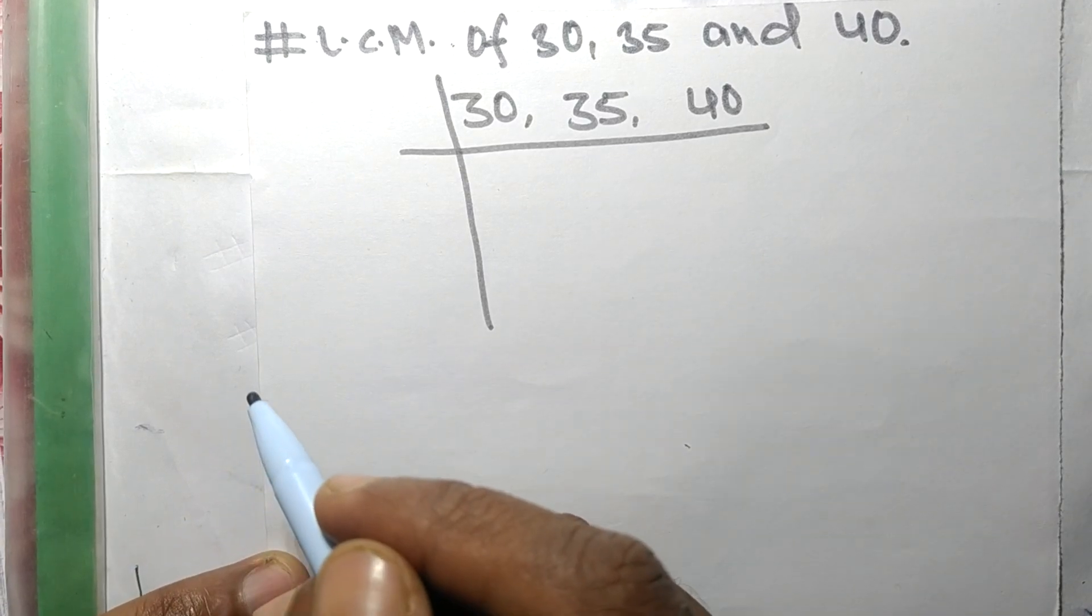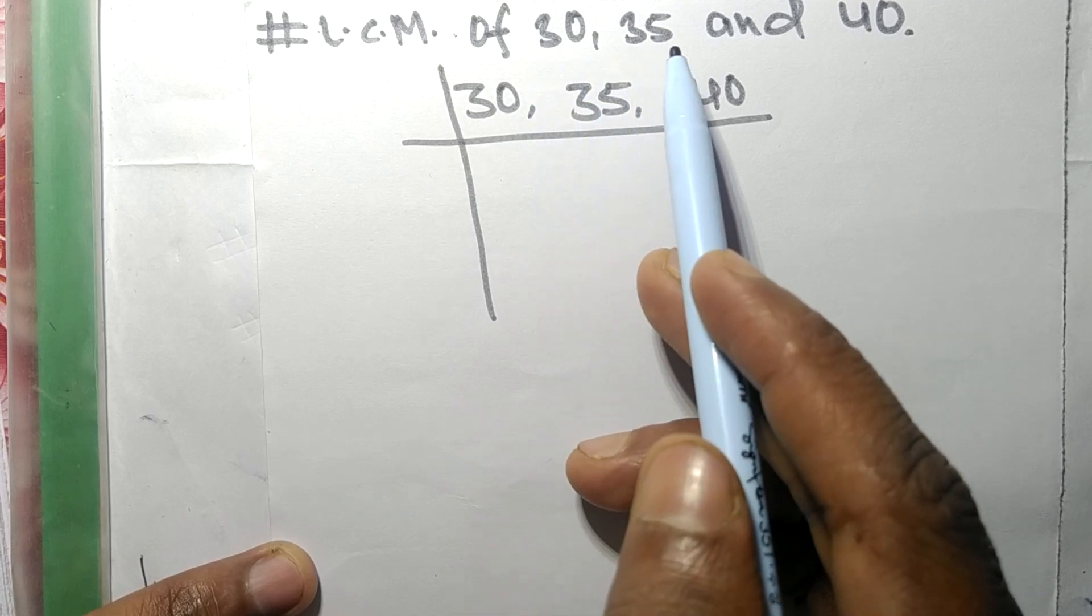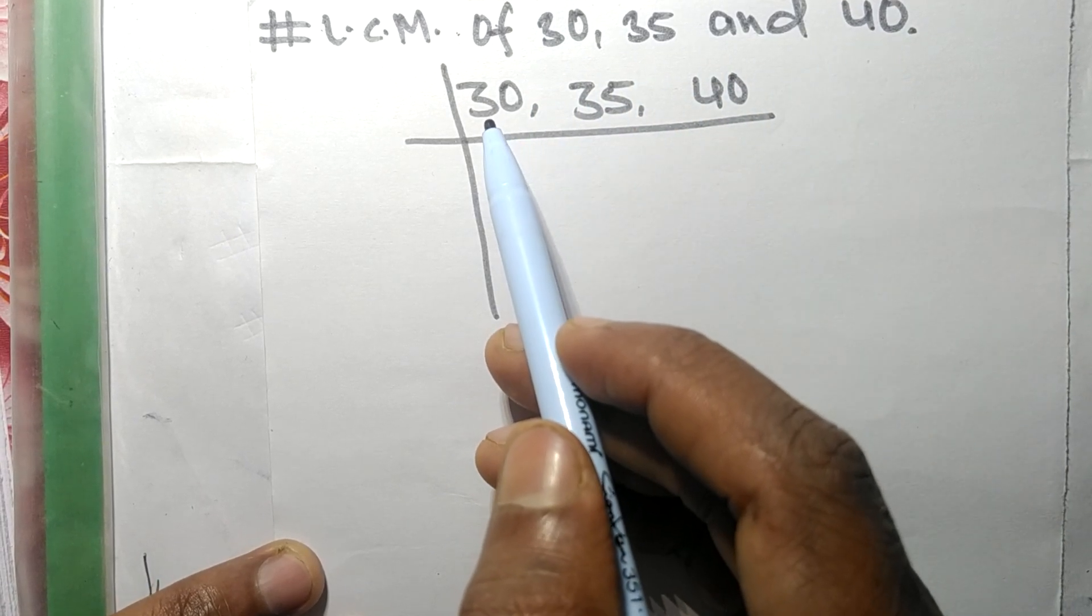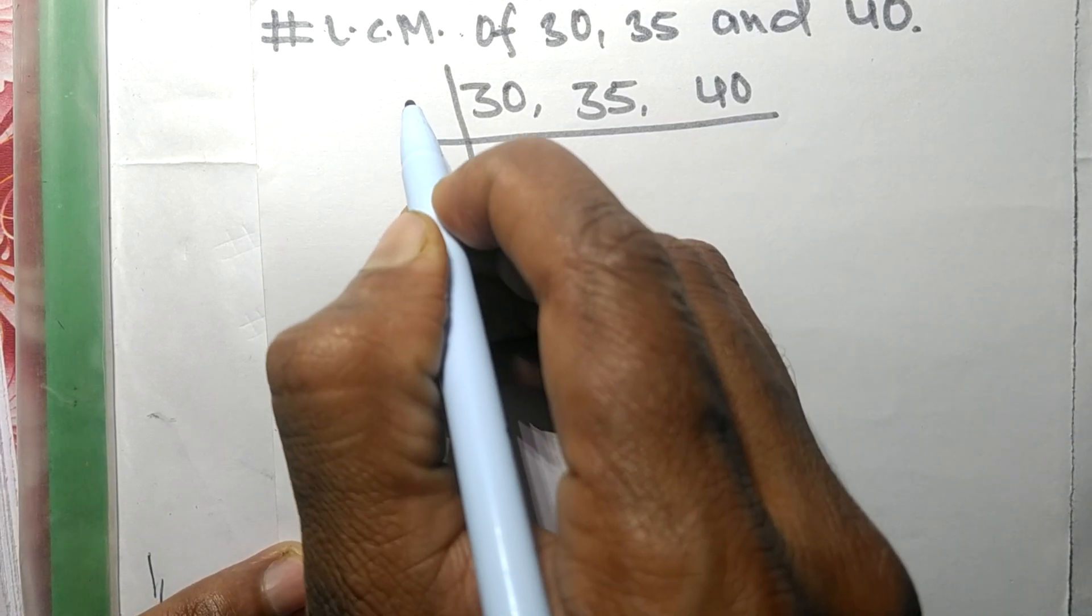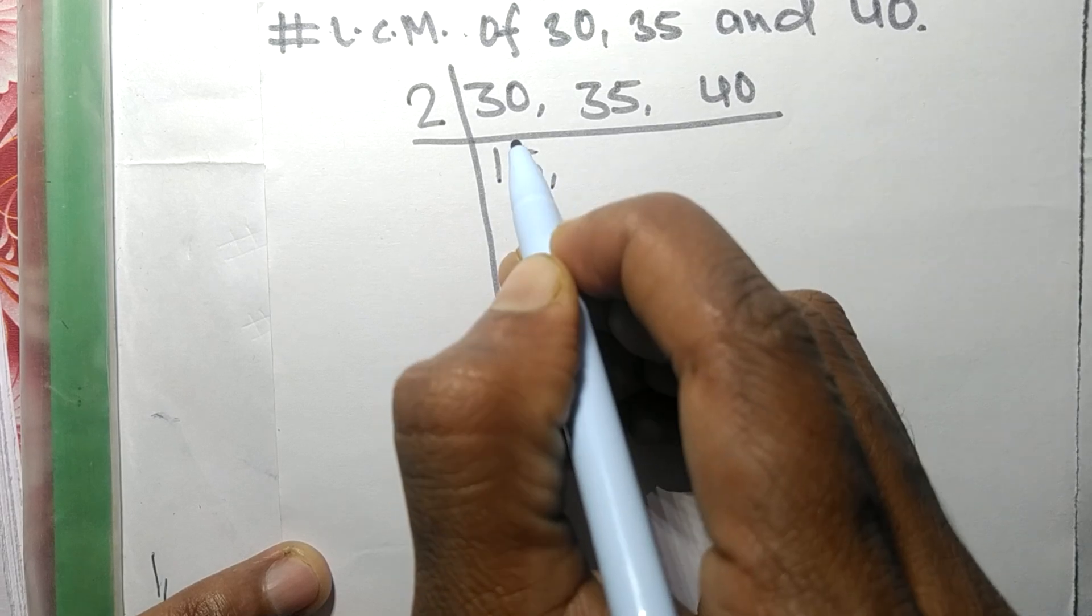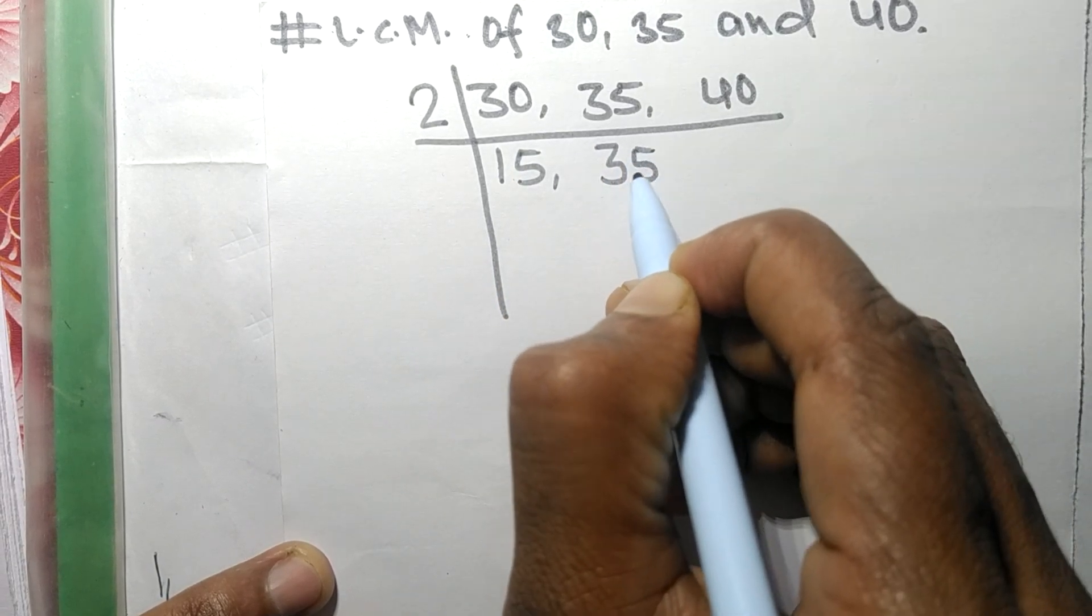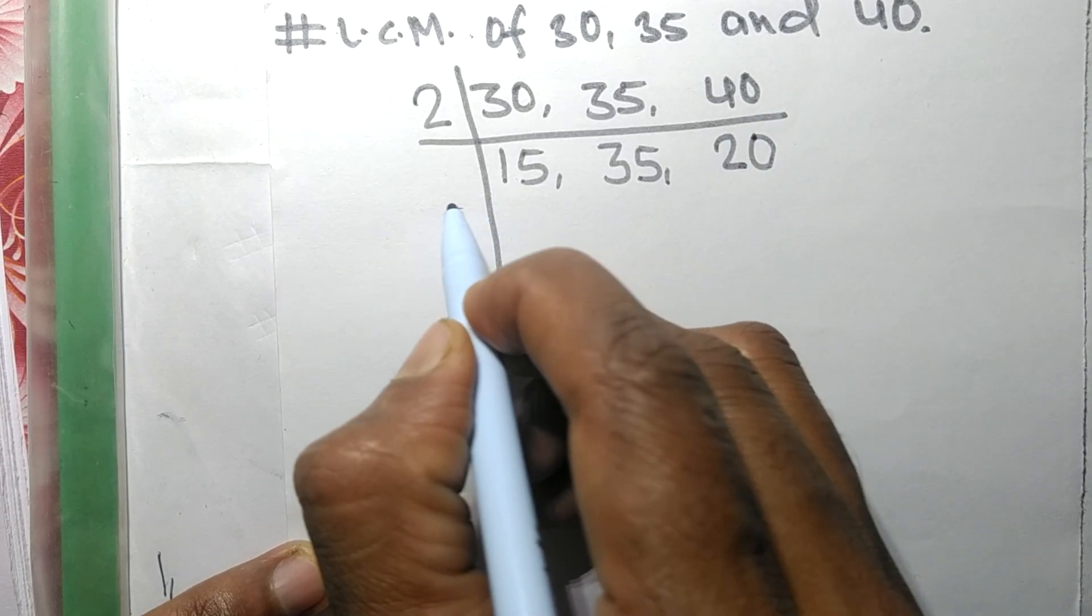Today in this video we shall find the LCM of 30, 35, and 40. 30 and 40 are exactly divisible by 2. 2 times 15 makes 30, 35 is not divisible so it stays the same, and 2 times 20 makes 40.